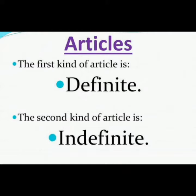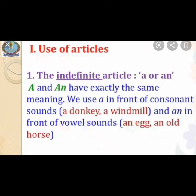There are two types of articles. The first kind is the definite article: 'the'. The second kind is the indefinite article: 'a' and 'an'. Now, how do we use the articles in a sentence?